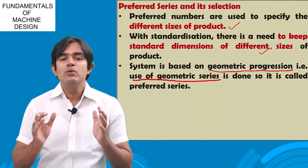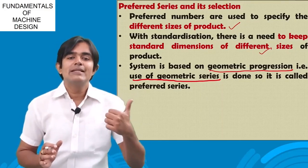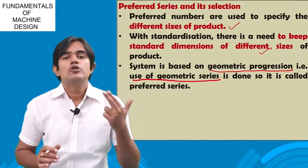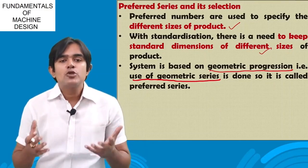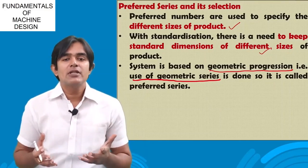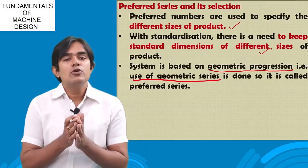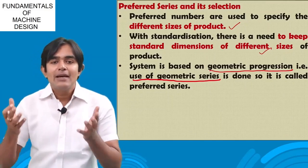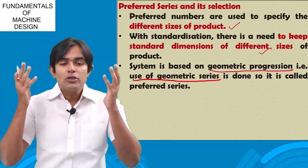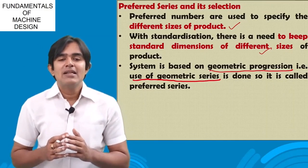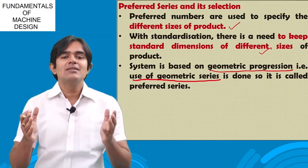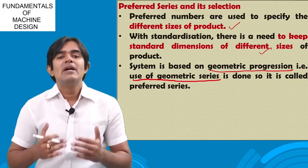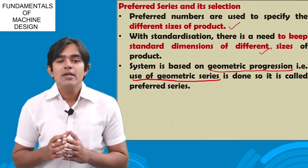The system is based on geometric progression, and the use of a geometric series is essentially the use of the preferred series. Why geometric progression specifically? Arithmetic progression gives us a lot of product sizes, and we don't want so many sizes because there will be unnecessary wastage of money. So geometric progression is preferred.